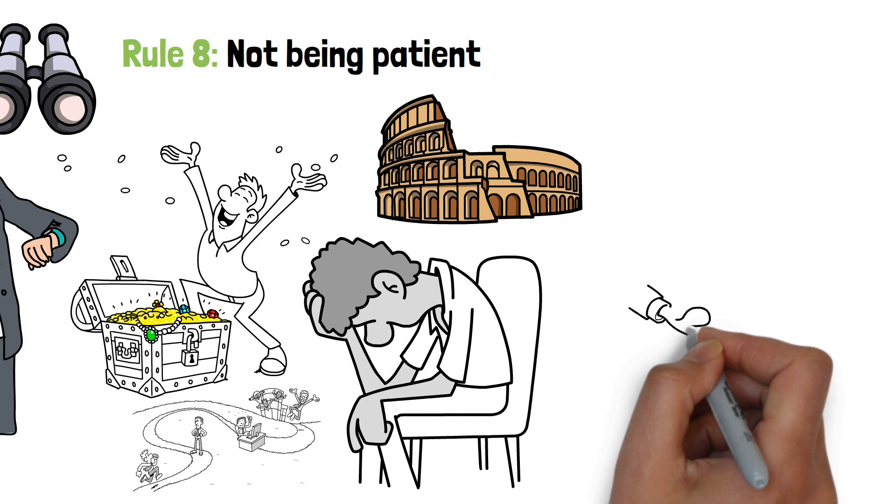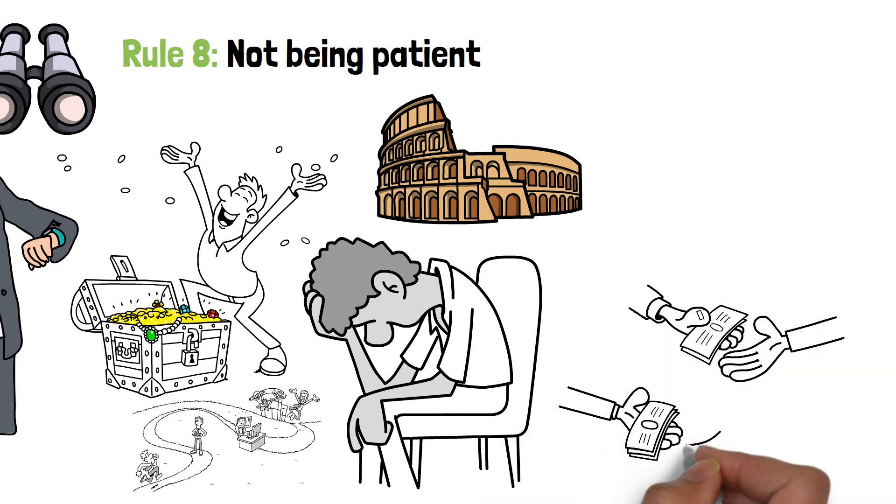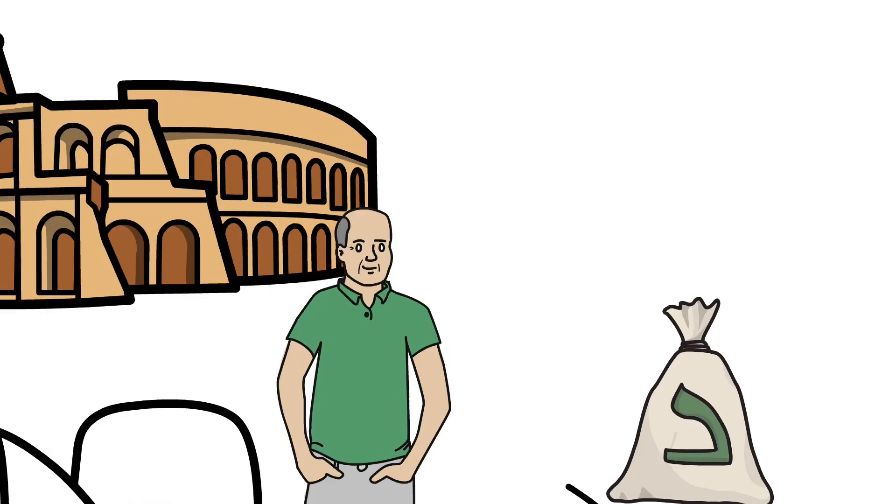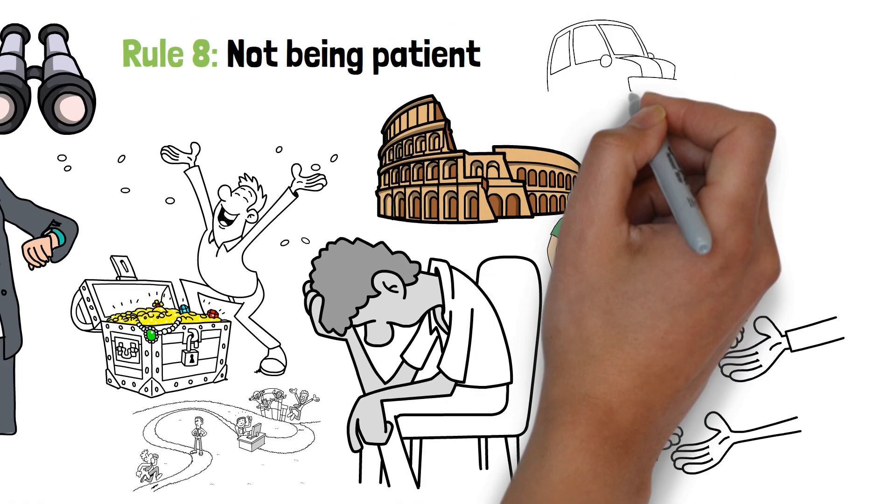Buffett himself is a testament to the power of patience. He has said the stock market is a device for transferring money from the impatient to the patient. In other words, those who are willing to wait for the long-term rewards of investing will be rewarded handsomely, while those who are impatient and seek instant gratification will likely miss out on the opportunity to build significant wealth.